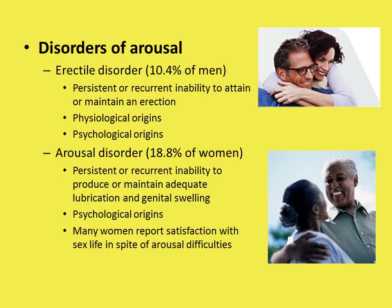The majority of men with physiological factors are over the age of 55. With a psychological origin, the dysfunction typically just happens suddenly with performance anxiety around it. With physiological origins, it's more likely to come on gradually, become more persistent, and get worse over time — typically in men over the age of 55 as part of the aging process.